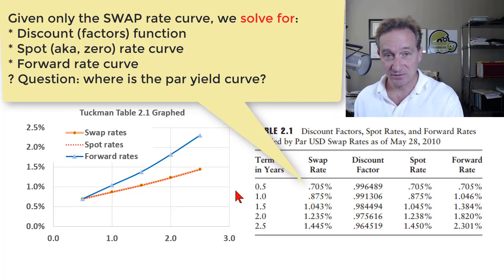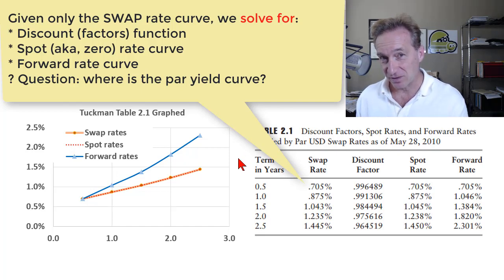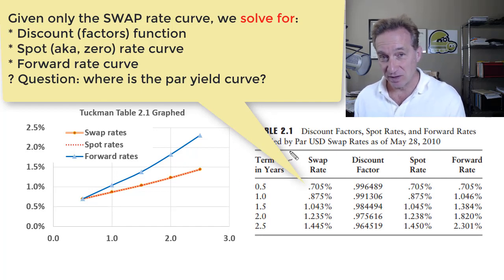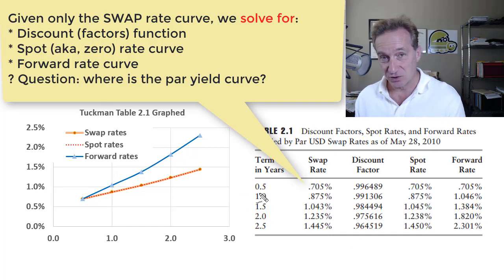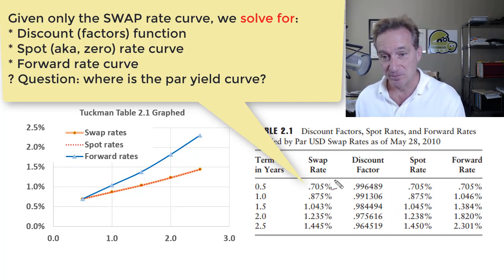If you've been following my playlist on fixed income, you know that when we say interest rate, we're not being very specific. It's a general risk factor that begs the question: which interest rate? In this video, I'll use Tuchman's Table 2.1, concepts assigned to FRM candidates, to show how the different interest rate factors are specifically coordinated.